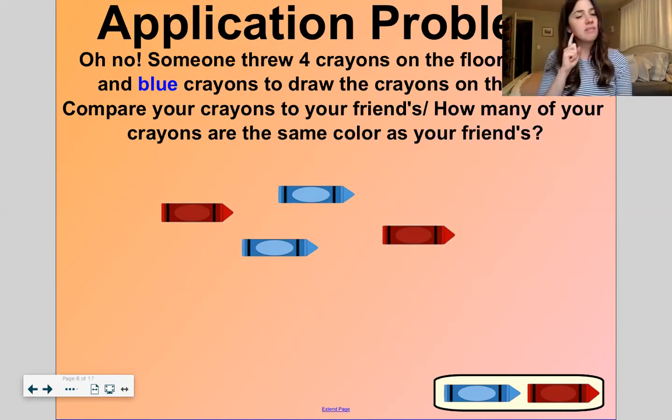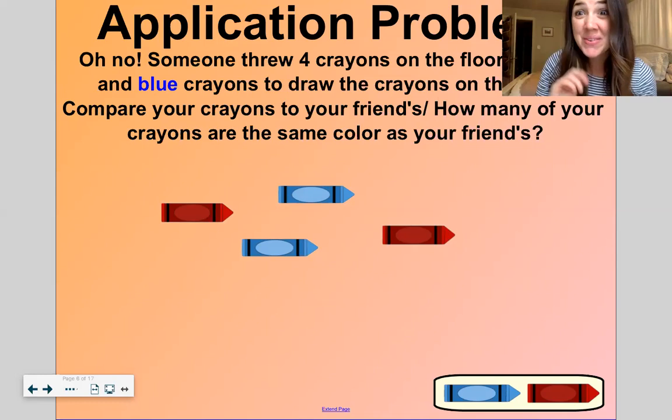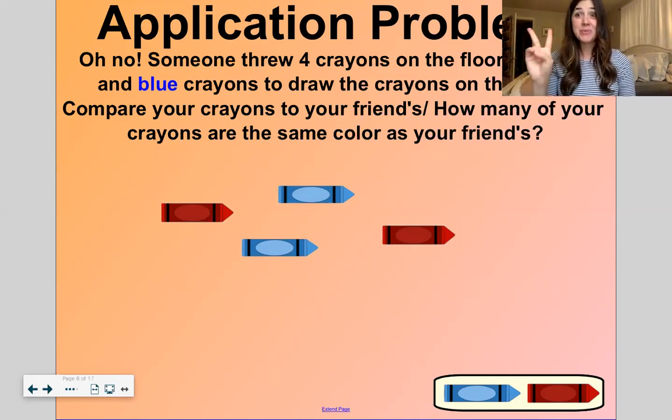How many of our crayons are blue? Two. How many do we have all together? Four. Yes. So two red and two blue is four all together. That's a hidden partner of four. All right. Now let's get ready to find some more hidden partners of 3.